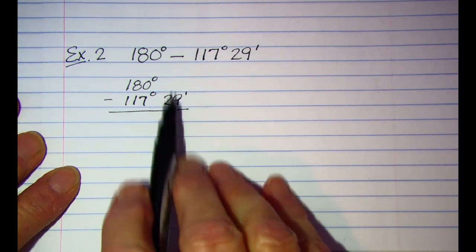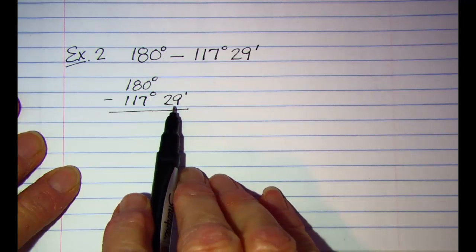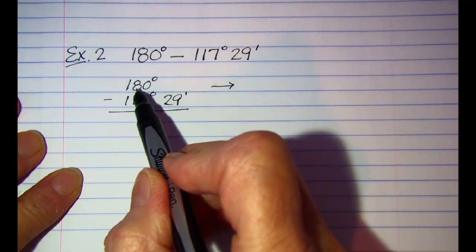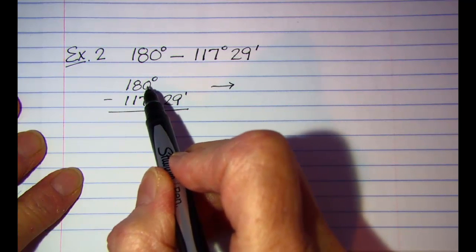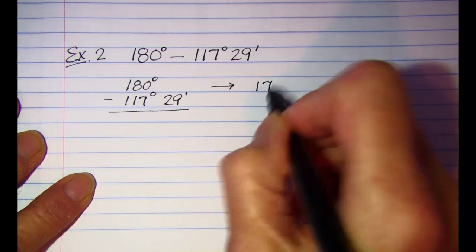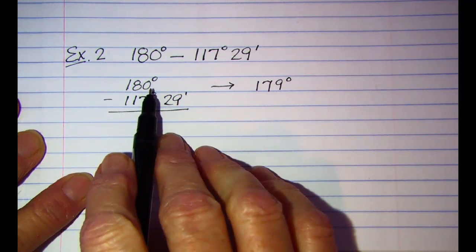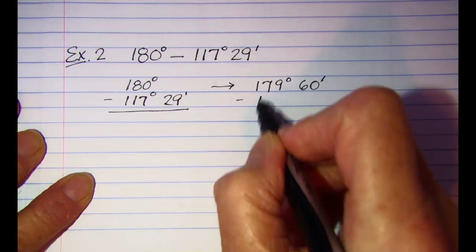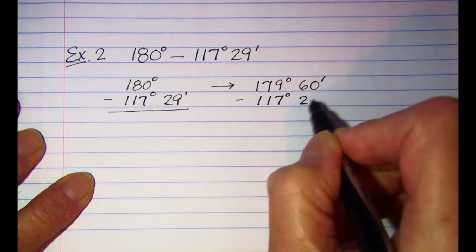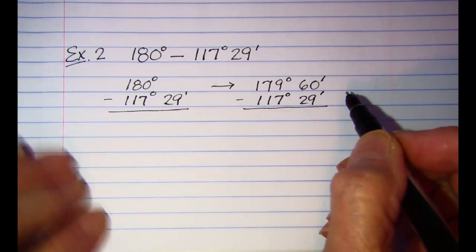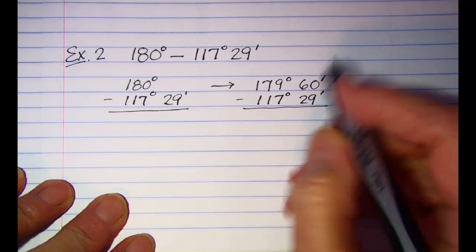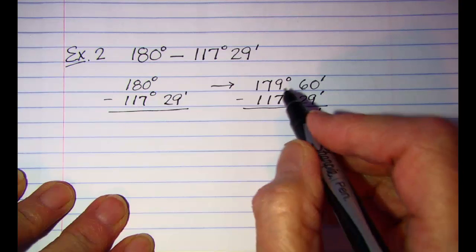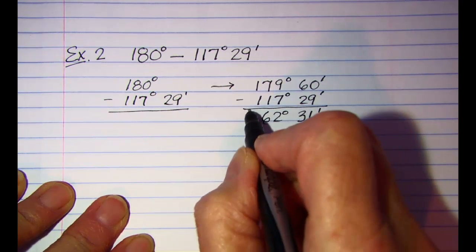Since we don't have any minutes to subtract the 29 minutes from, I need to rewrite the problem. I borrow one degree from 180 degrees, leaving 179 degrees, and convert that borrowed degree to 60 minutes. Now subtracting: 60 minus 29 gives 31 minutes, and 179 minus 117 gives 62 degrees. So the answer is 62 degrees 31 minutes.